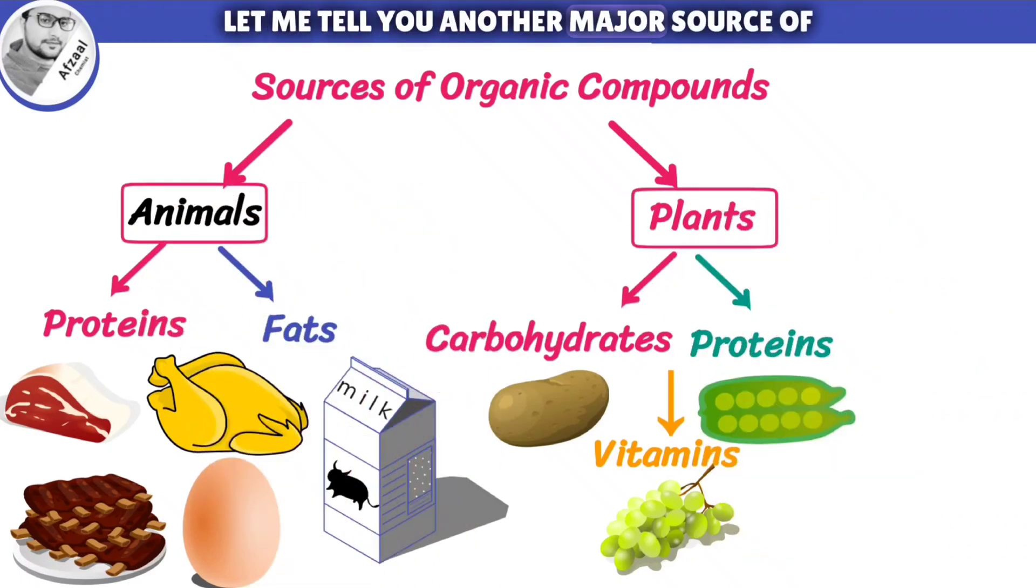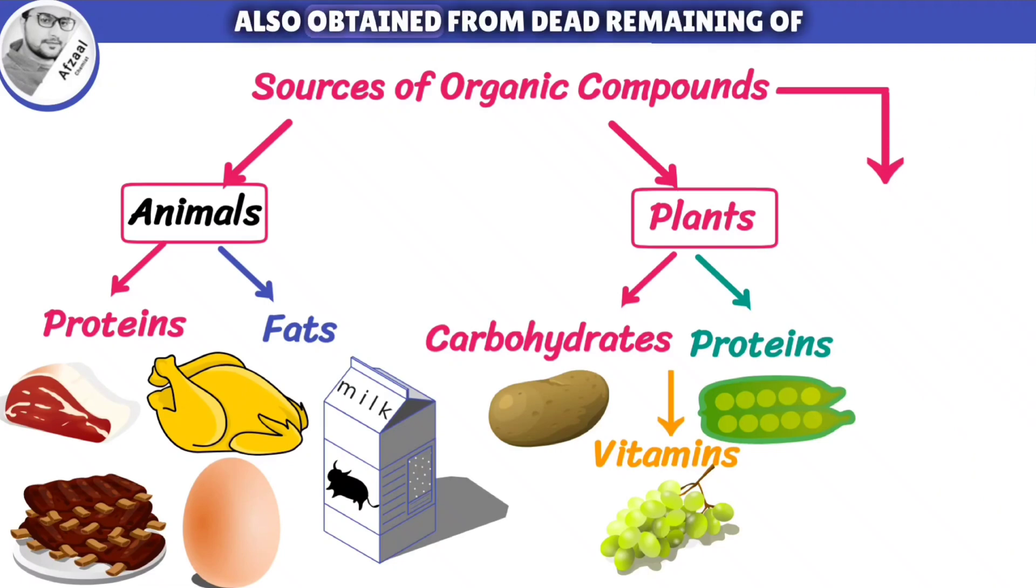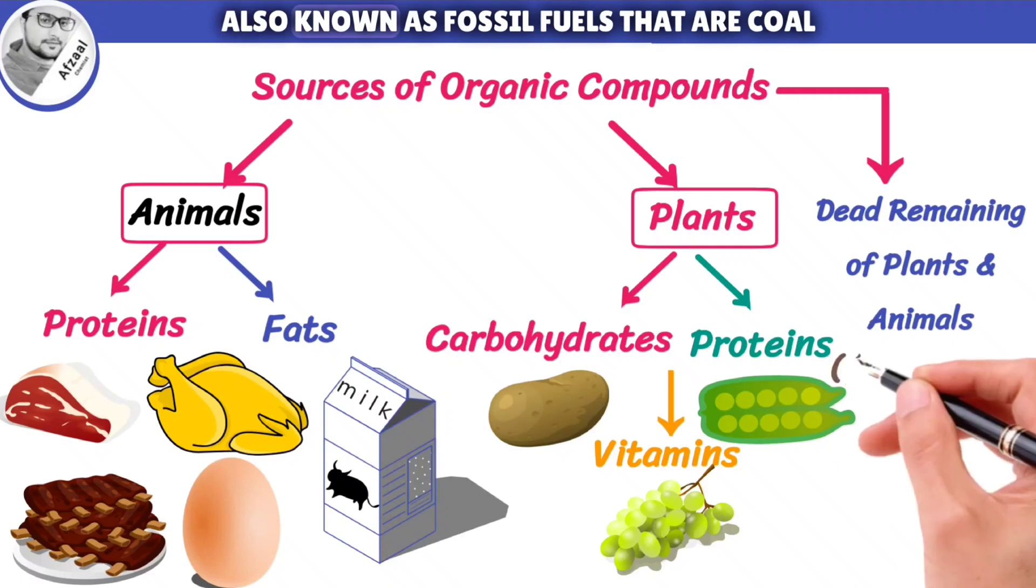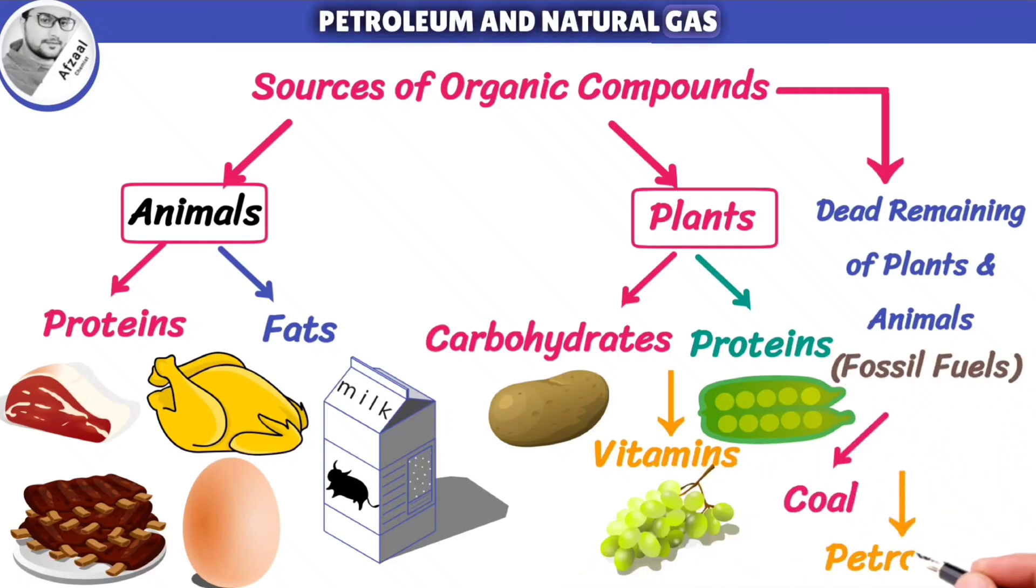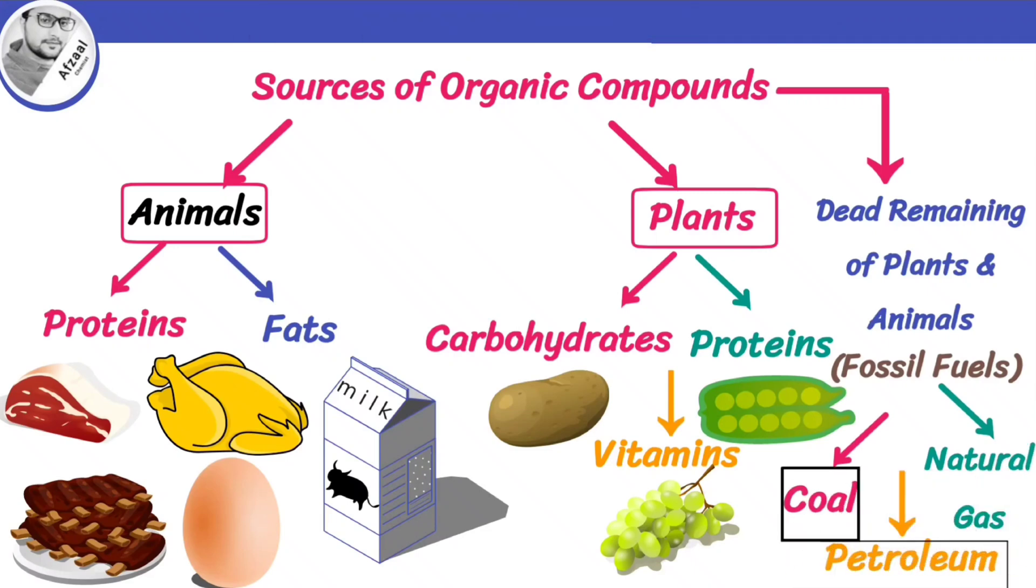Let me tell you another major source of organic compounds. Organic compounds are also obtained from dead remains of plants and animals, also known as fossil fuels, that are coal, petroleum and natural gas. These materials are the main sources of organic compounds. We can get thousands of organic compounds from them.